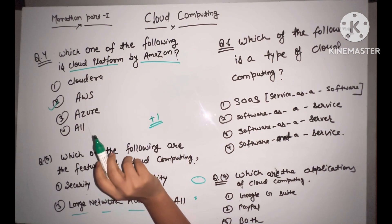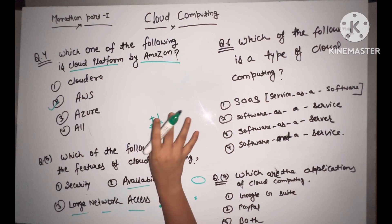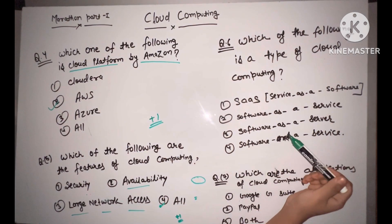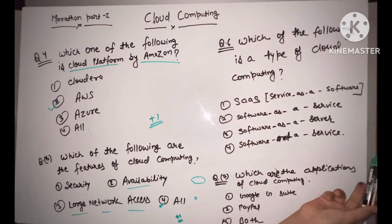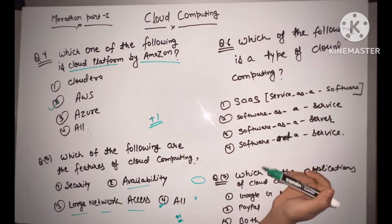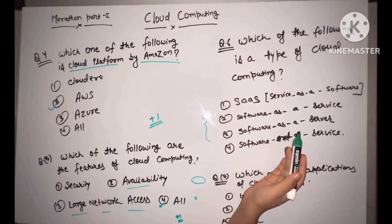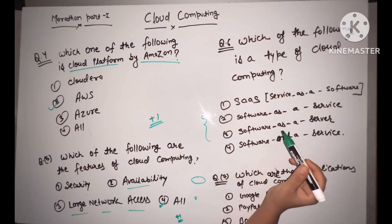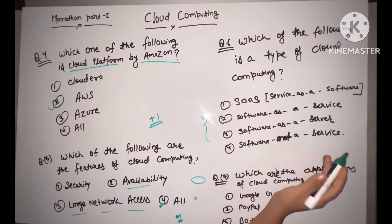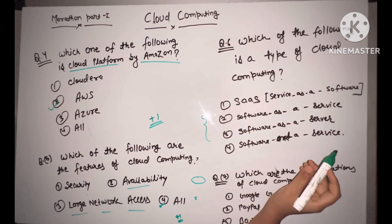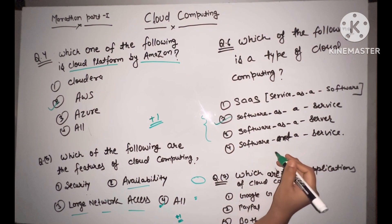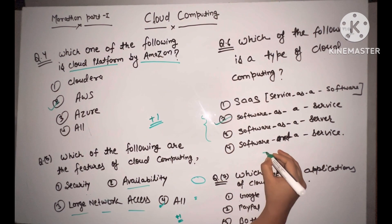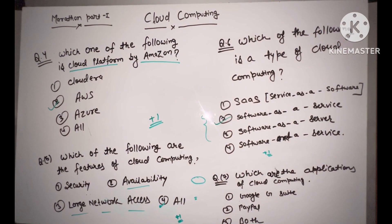Next: which of the following is the type of cloud computing? The four options are: Service as a Software, Software as a Service, Software as a Server, Software and a Service. This has already been studied in the cloud computing playlist. The correct answer is Software as a Service.